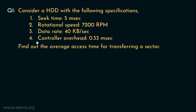The next specification is the controller overhead, which has been specified as 0.33 milliseconds. The hard disk controller, or adapter, is the interface between the processor and the disk. It receives and interprets the processor's commands and sends control signals to the disk. Controller overhead means the processing time of the controller. We are supposed to find out the average access time of the hard disk drive for transferring a sector.